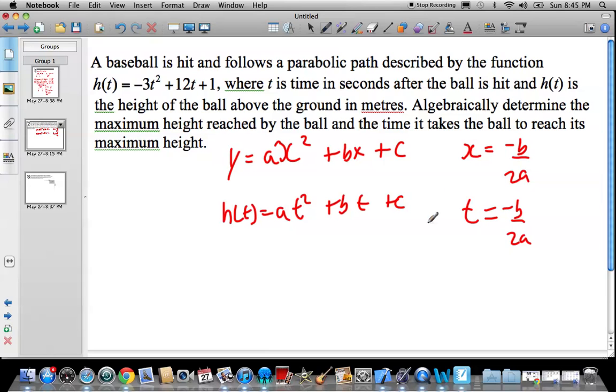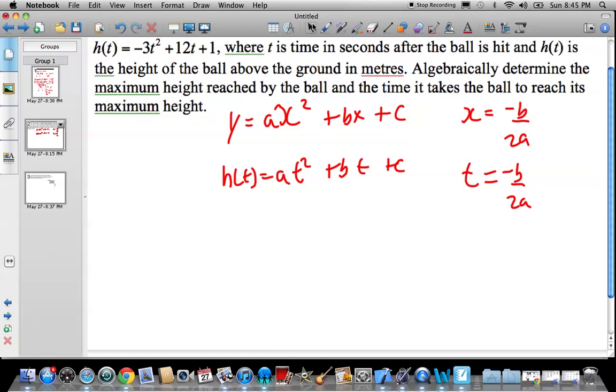So what finding the axis of symmetry does in this is determine the time it takes the ball to reach the maximum height. So the point at which the ball reaches the maximum height. And then in order to determine the maximum height, we have to find H of T or Y by subbing T back into our formula. So let's do that. Let's find the maximum height. So if you look here, I have T is equal to negative B over 2A. Now negative 12 over 2 times negative 3. So the time, so negative 12 divided by negative 6 is going to be 2. Good check to see if you did this correctly. Is it positive? If not, then you're in trouble. Time is always positive.